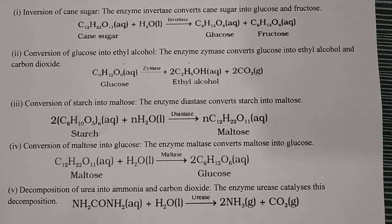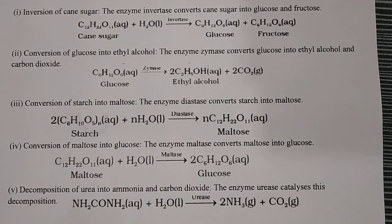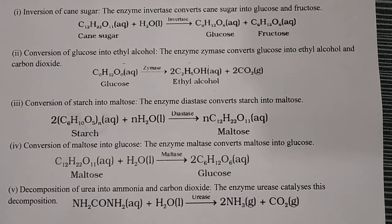First: inversion of cane sugar - the enzyme invertase converts cane sugar into glucose and fructose: cane sugar + H2O → glucose + fructose. Second: conversion of glucose into ethyl alcohol - the enzyme zymase is used for alcohol production: glucose → 2 moles of ethanol. Third: conversion of starch into maltose - in the presence of diastase, starch undergoes hydrolysis to give maltose.